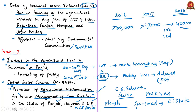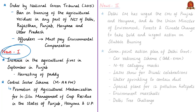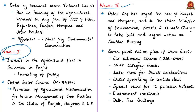There is one more news article related to stubble burning in the Delhi edition. The Delhi Chief Minister wrote a letter to the Chief Ministers of Punjab and Haryana and to the Union Ministry of Environment, asking them to take bold and urgent action on stubble burning. Delhi government has also announced a 'Parali Action Plan' — a seven-point action plan to be implemented in November in Delhi. Parali means stubble in Punjabi.